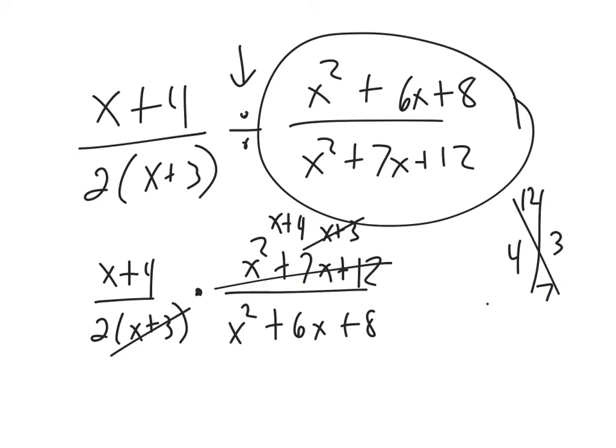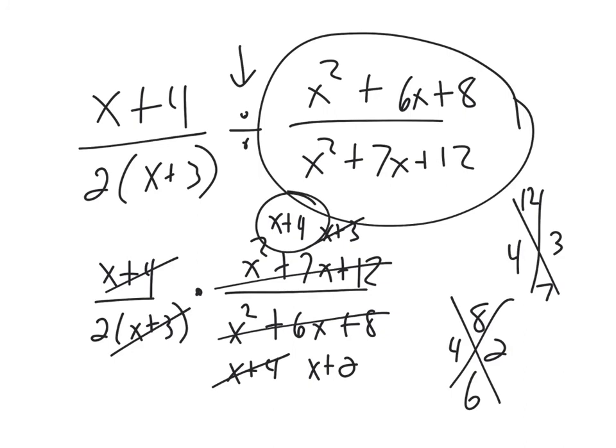And then this guy, if I have an 8 and a 6, that'd be 4 and 2, right? So (x plus 4) and (x plus 2). And so gone and gone. So all that's left on top is (x plus 4).